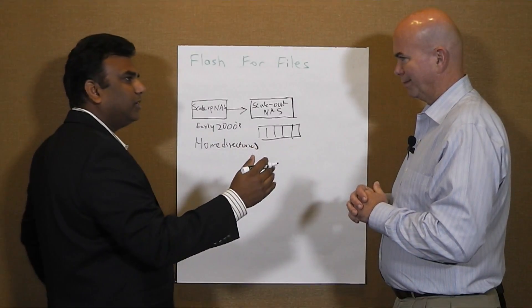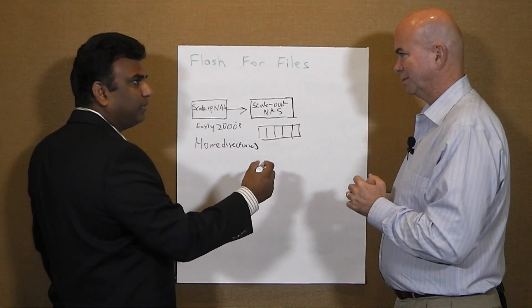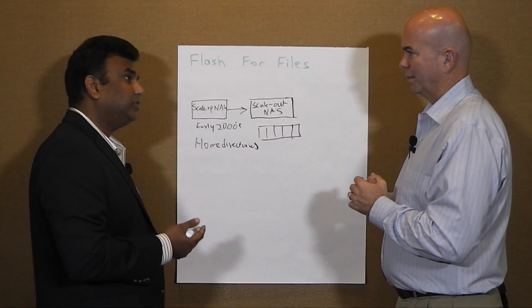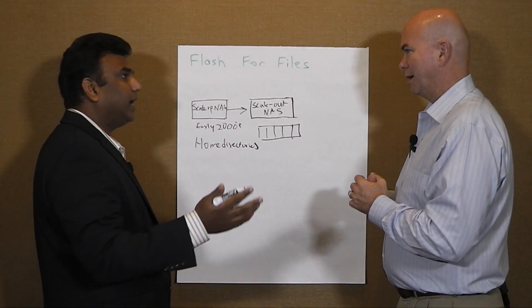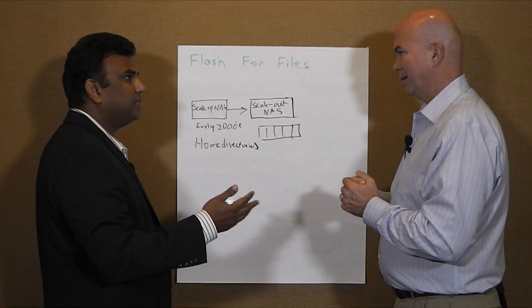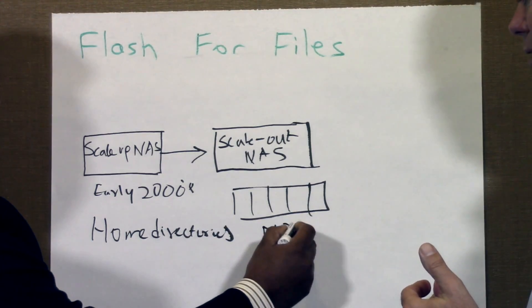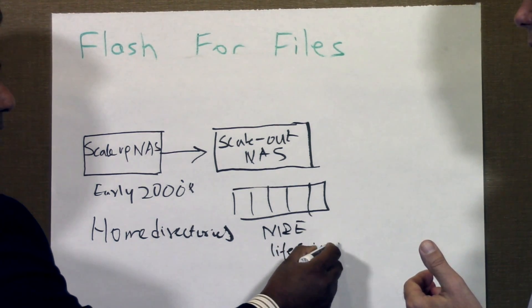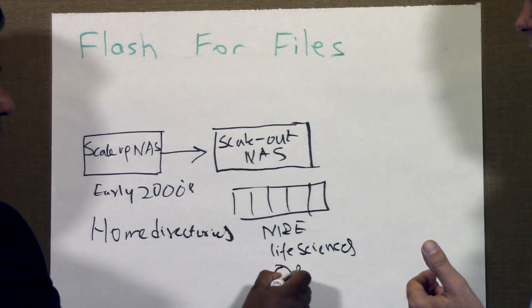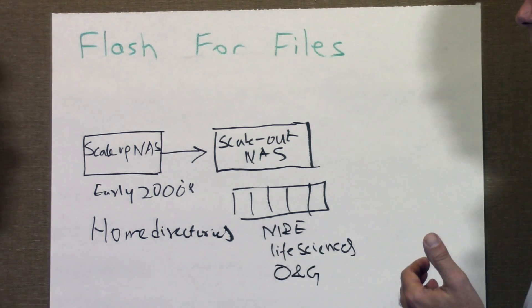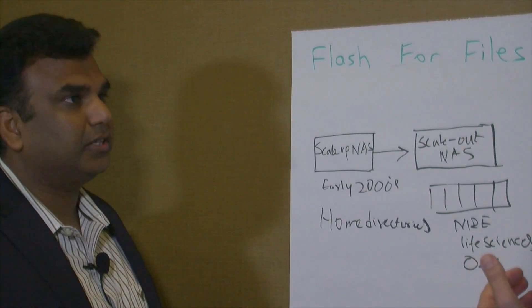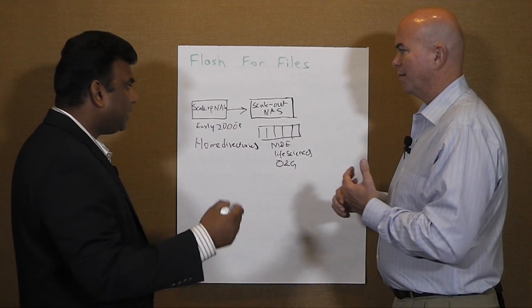You have a common namespace across them and it was scaling performance also. It became very popular mainly for industry use cases where they cared about having lots of storage but also needing performance to scale — media and entertainment, life sciences for sequencing, and oil and gas for seismic analysis. These are all very industry-specific applications that needed a lot of performance and lots of capacity consolidated.